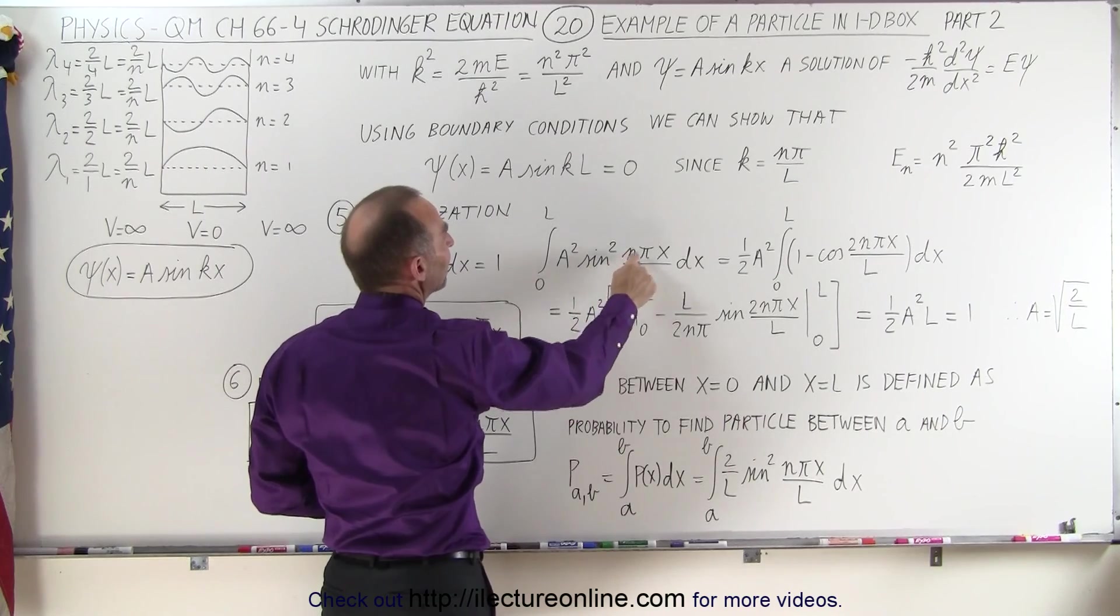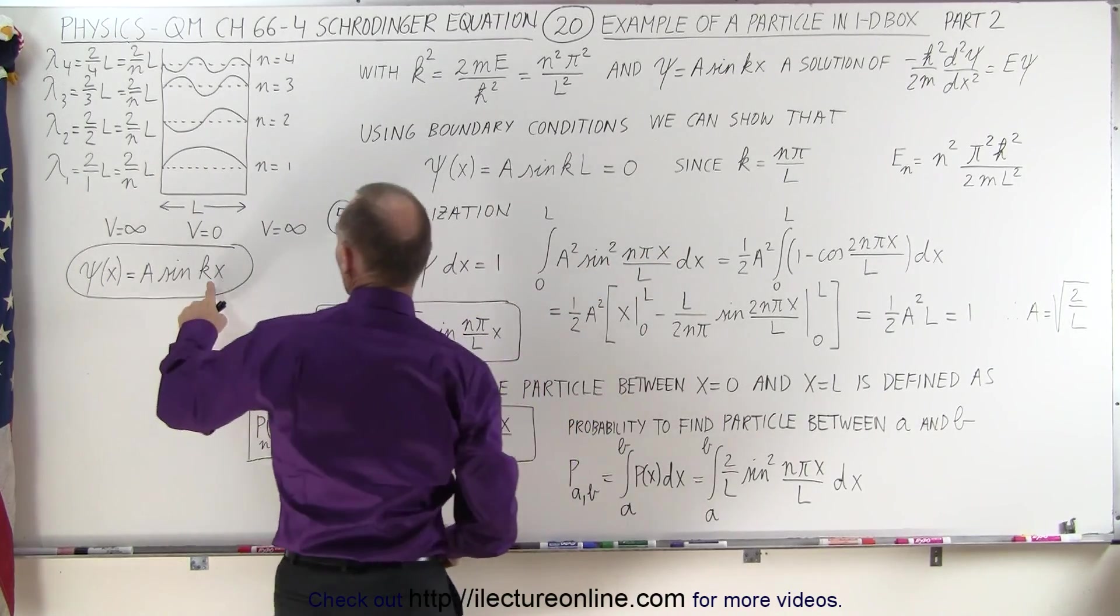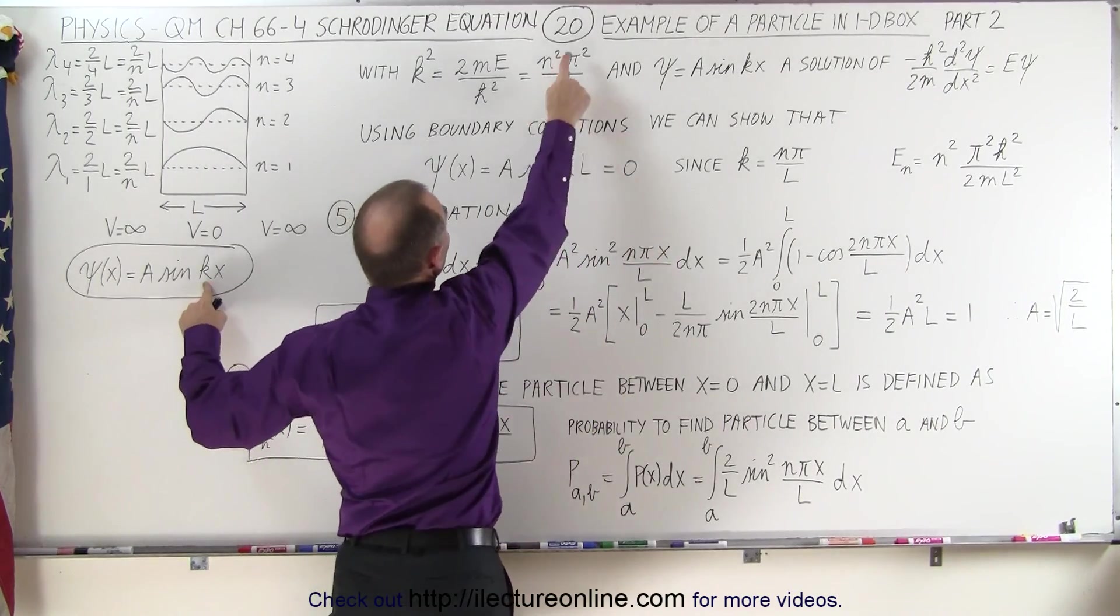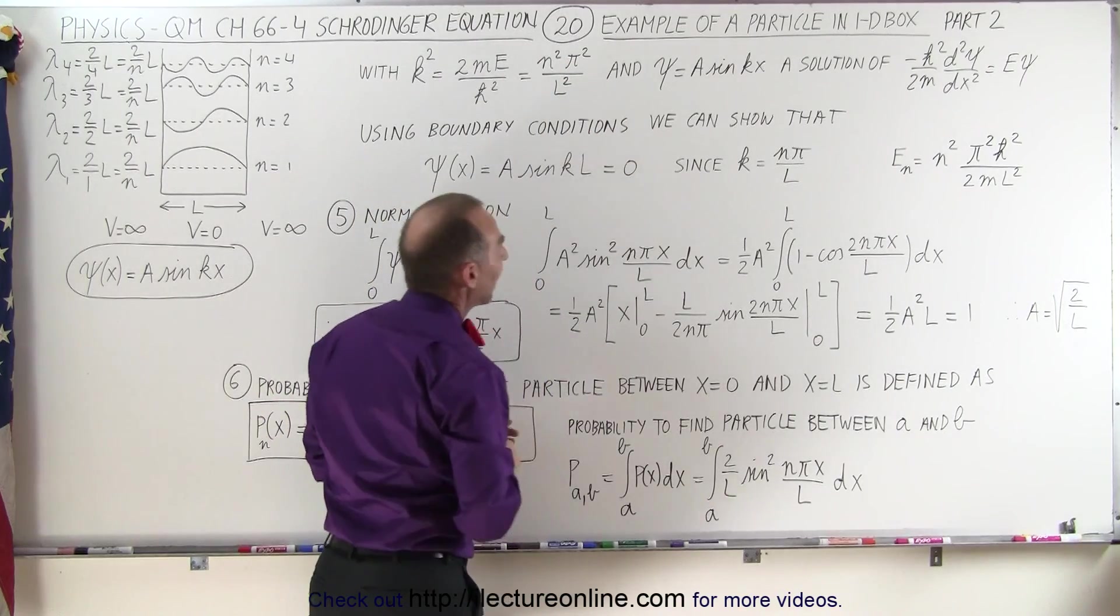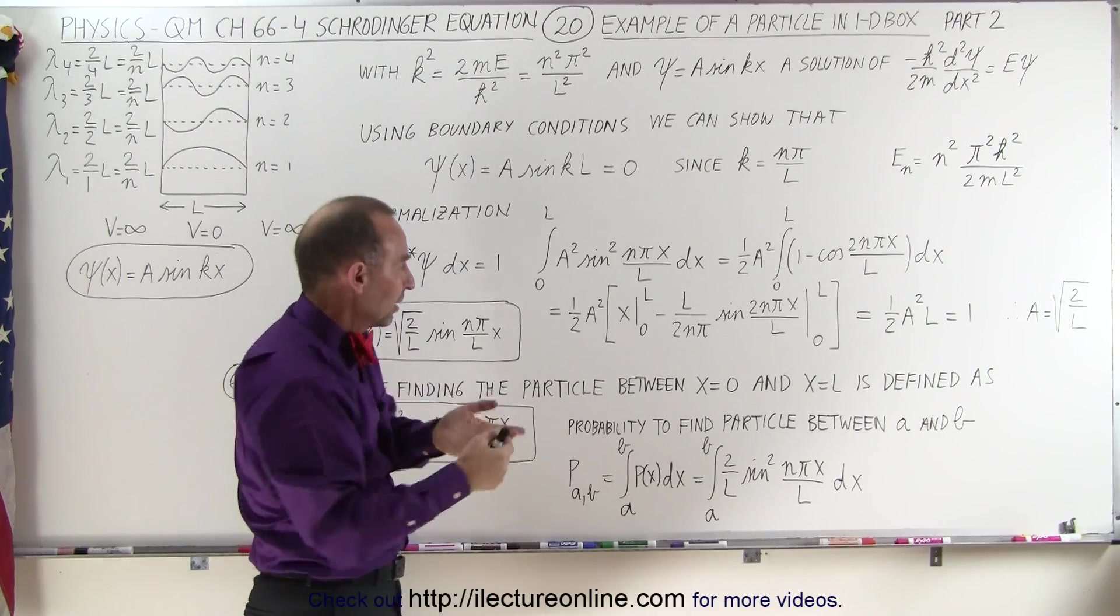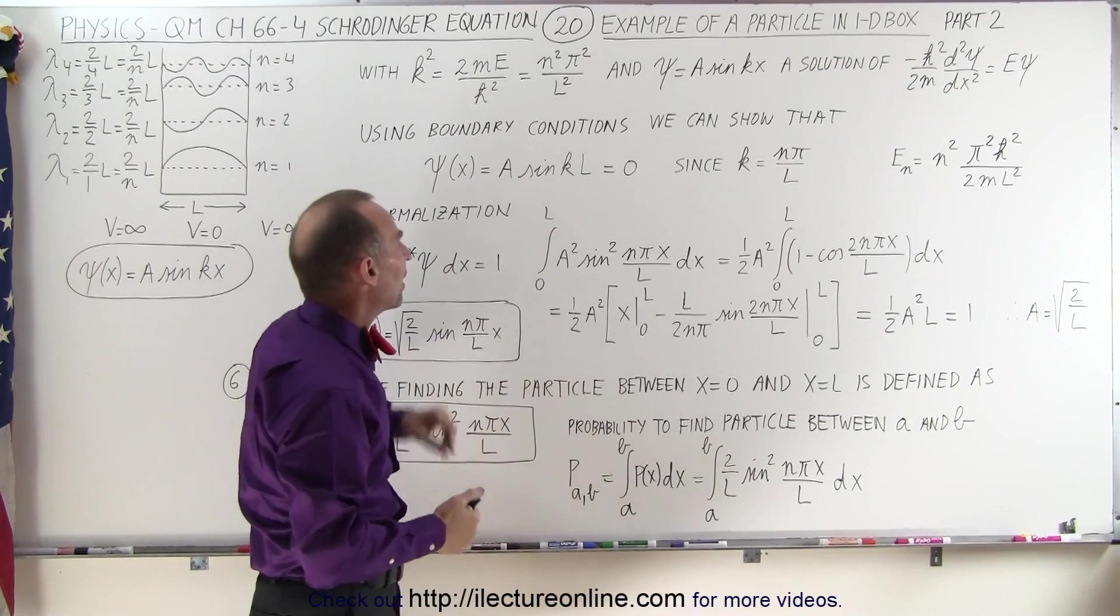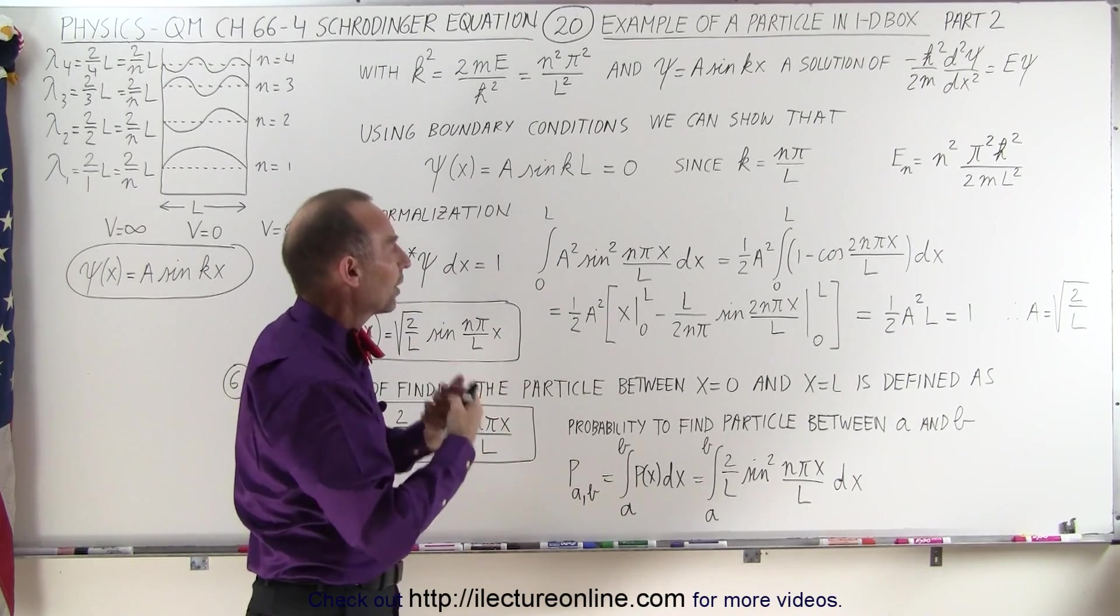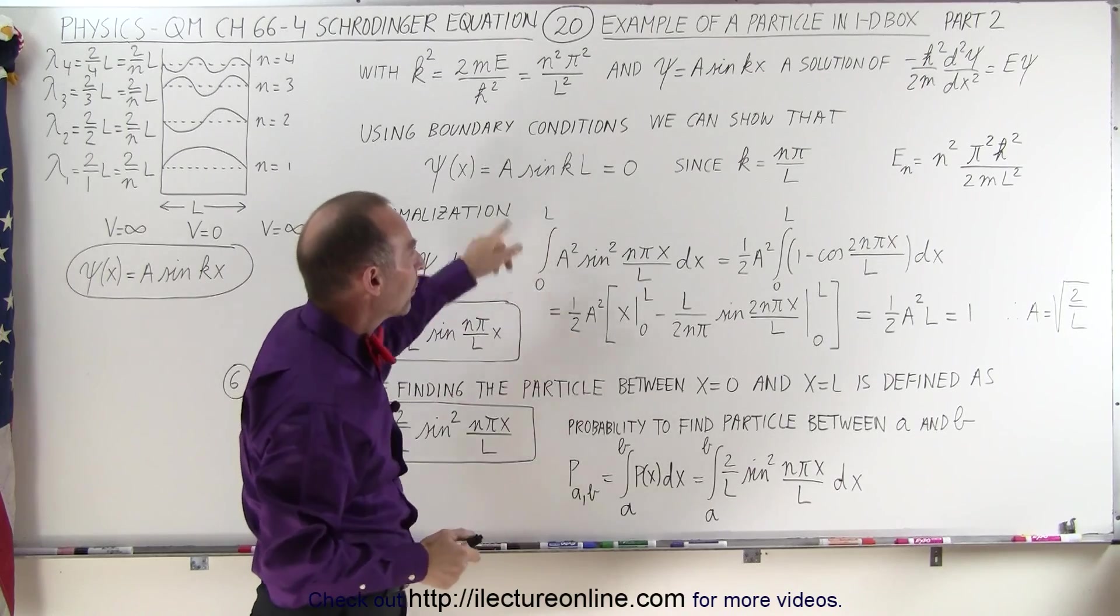So let's go ahead and use our wave function, so we have a sine of n pi x over l, because instead of using k, we're going to use n pi over l, and we're going to square that. Of course there's no complex conjugate here, because no i in the wave equation, so we simply square the equation, and then we integrate that.